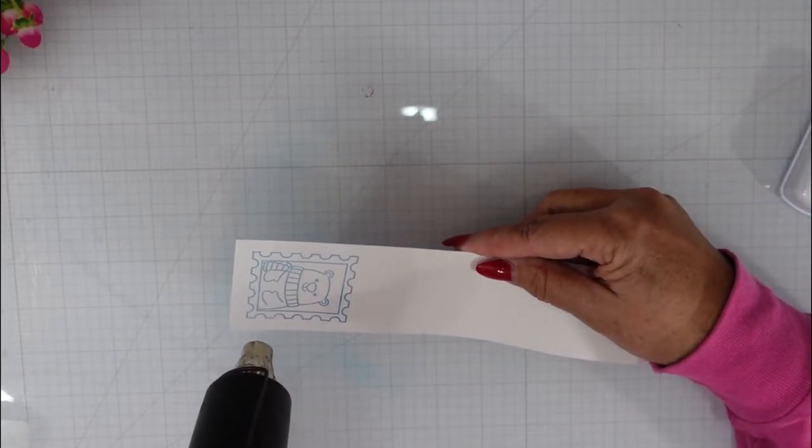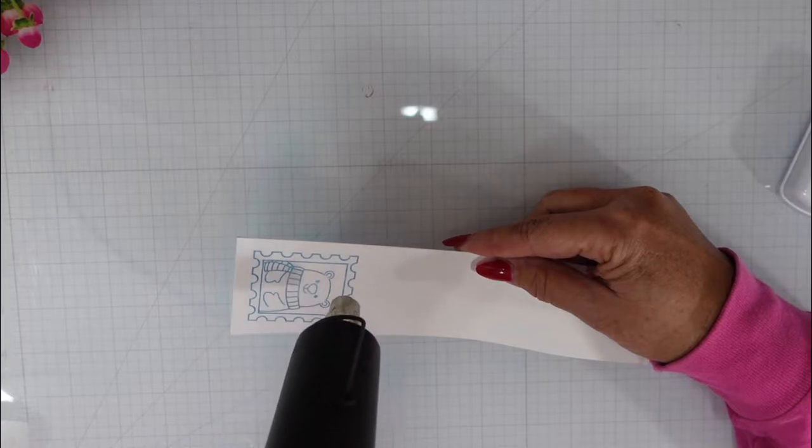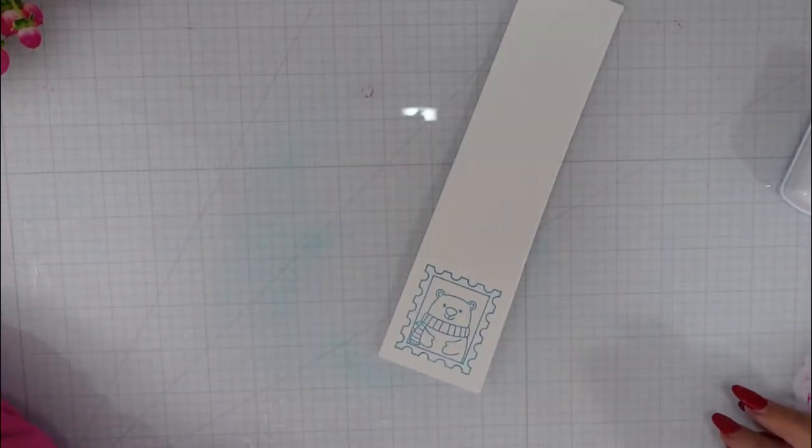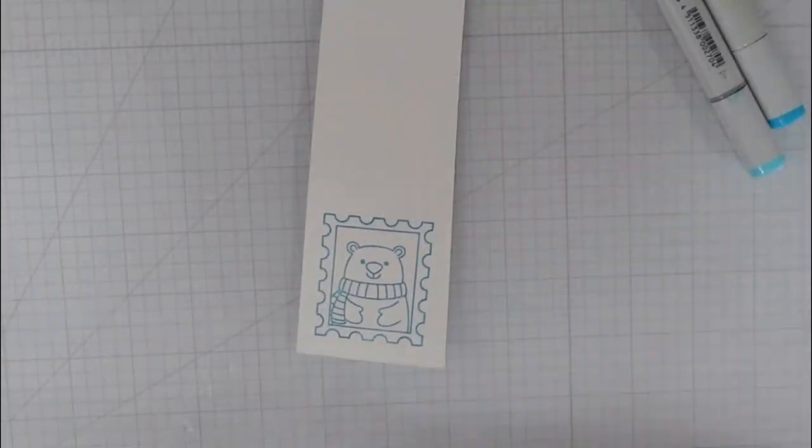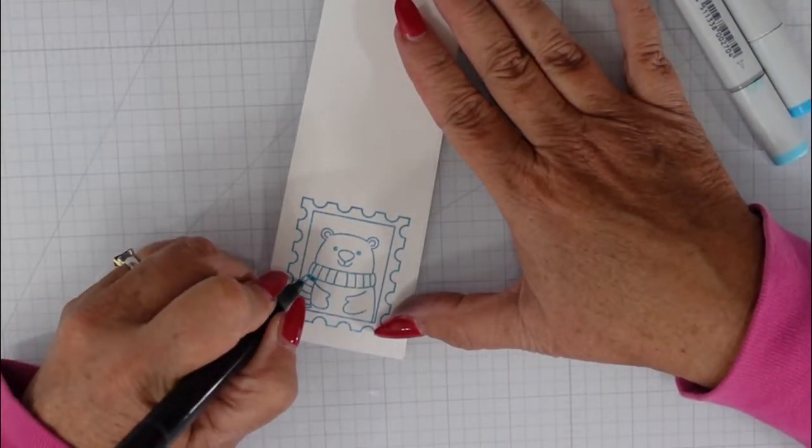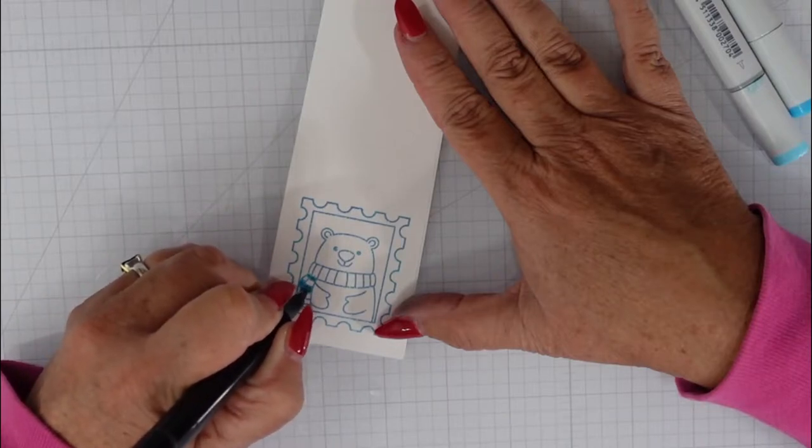And then I'll heat up my heat tool for about 30 seconds and we're going to melt that clear embossing powder. So this is going to keep with that monochromatic feel instead of going with black ink.